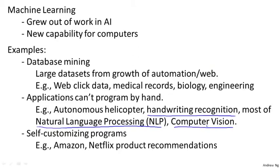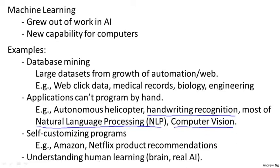Learning algorithms are also widely used for self-customizing programs. Every time you go to Amazon, Netflix, or iTunes Genius and it recommends new movies, products, or music to you, that's a learning algorithm. If you have a million users, there's no way to write a million different programs. The only way to give customized recommendations is if the software can learn by itself to customize to your preferences. Finally, learning algorithms are also being used today to understand human learning and to understand the brain.